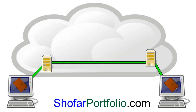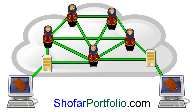A standard email, even when encrypted, provides much information to the interceptor: the time it is sent, the size of the message, and in many cases the from and to addresses remain visible. The Matryoshka model uses multiple techniques to hide the who, what, where, and when of your communications.